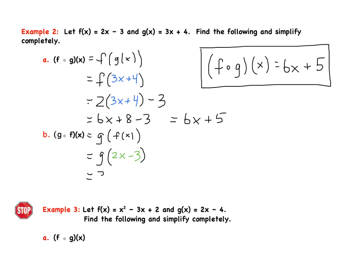So it's going to look like 3 times that quantity 2x - 3 plus 4. 2x - 3. And now we distribute the 3. We clean everything up to get our final answer. So 3 times 2x, we're going to get 6x. 3 times -3 is minus 9. And then can't forget about that plus 4 in the end.